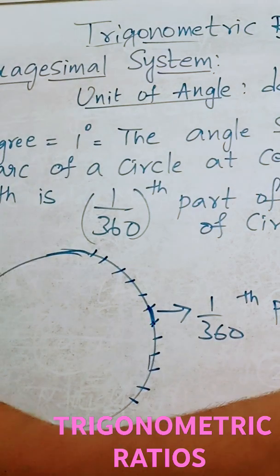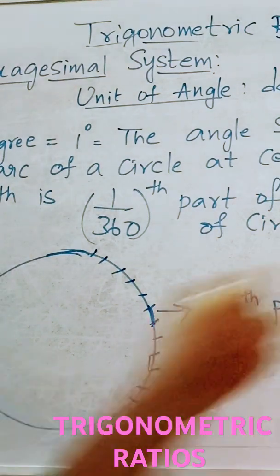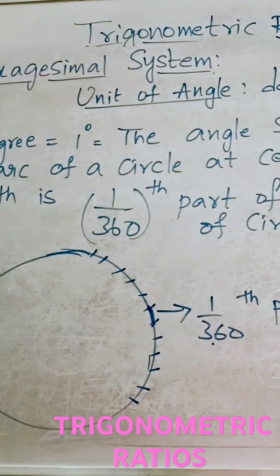Okay? Circumference of a circle. This particular length of arc is 1 by 360th part of the entire circumference of the circle.